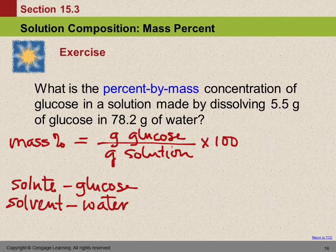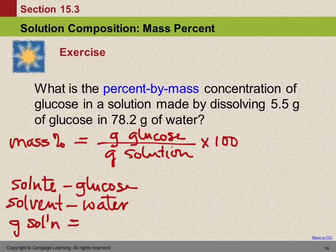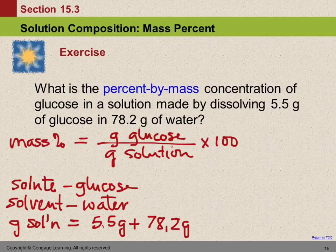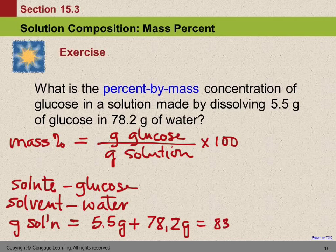So grams of solution is going to equal the mass of the solute plus the mass of the solvent. So it's going to be the glucose, which is 5.5 grams, plus the mass of the water, 78.2 grams. Because what they're saying is you took 78.2 grams of water in a container and you add 5.5 grams of glucose to it. So what's the mass of the whole thing? You just add the masses together. So that's going to be 83.7 grams.